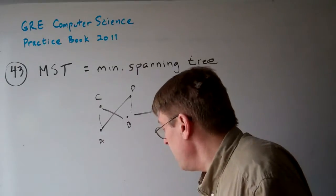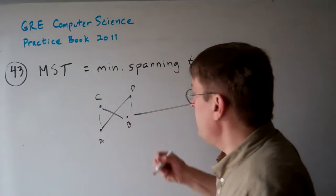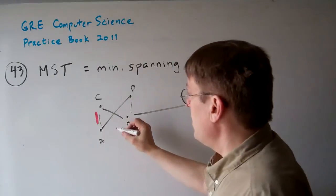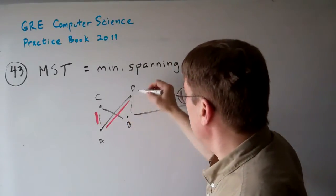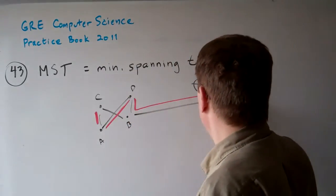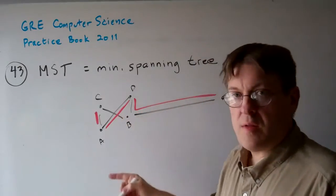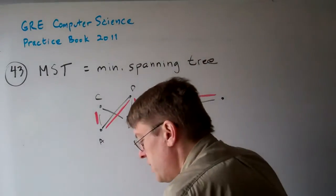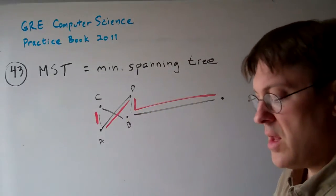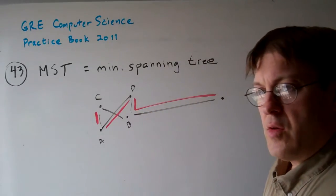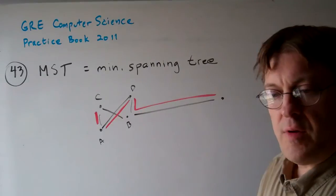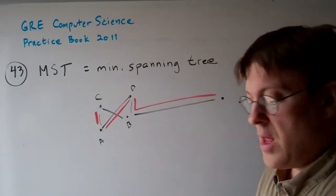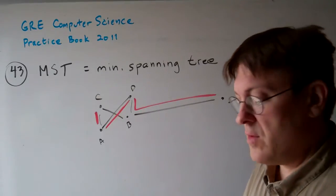So for example, one example of a minimum spanning tree might be C and A are connected, A and D are connected, D and B are connected, and we get rid of this other link. So that's a minimum spanning tree. It's basically the graph with the least number of edges that still connects all the nodes, all the vertices.